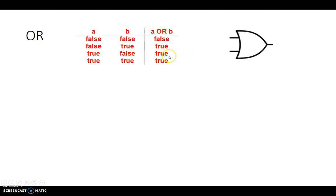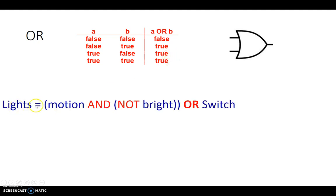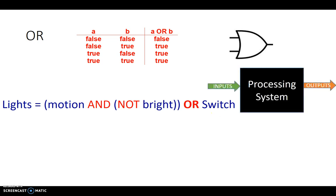There is a circuit for a two input OR logic gate. Now for our expression where we had lights is equal to motion and not bright or switch, the processing logic for this can be drawn as following. The inputs are motion, bright, and switch, and the output is lights.